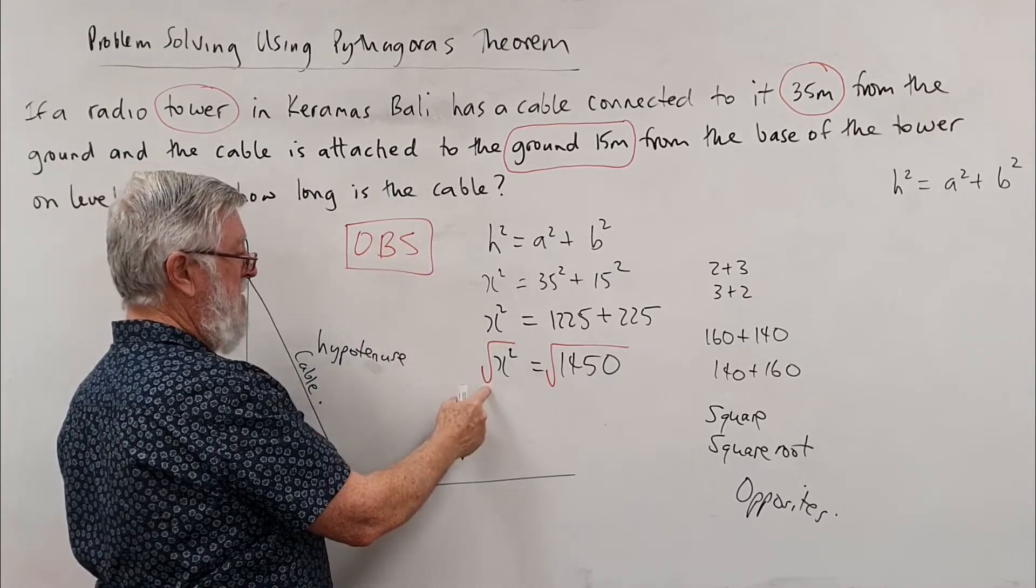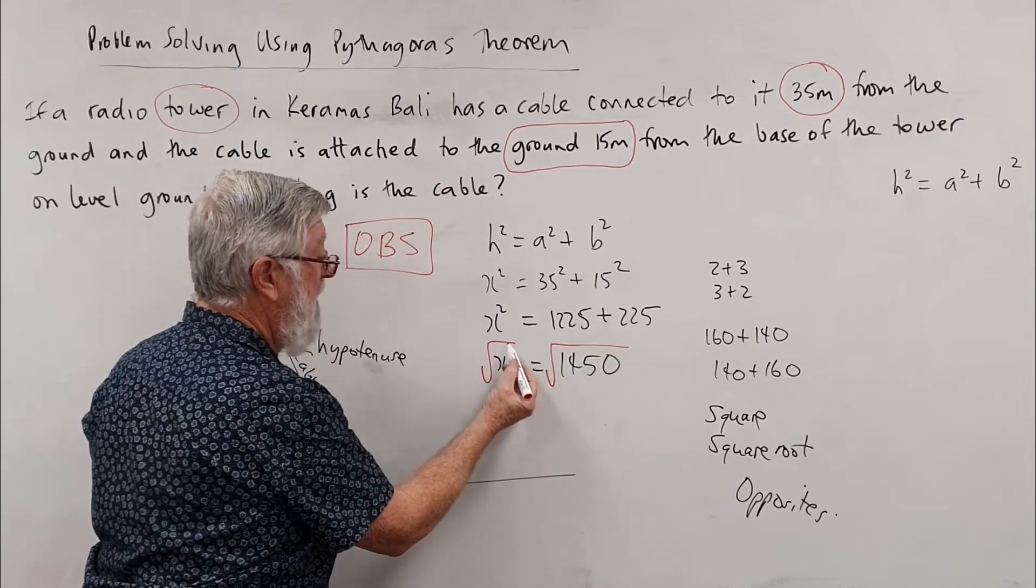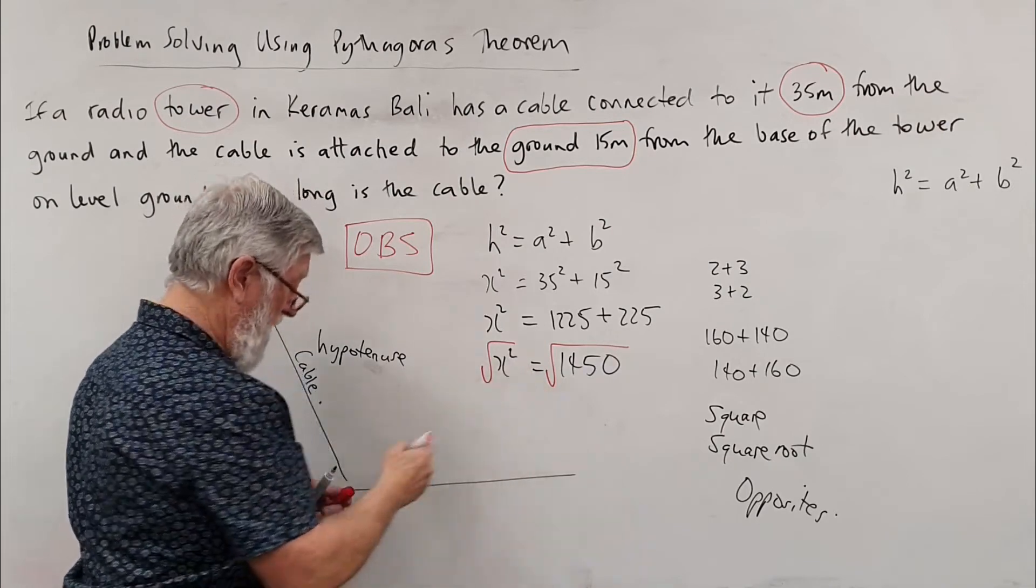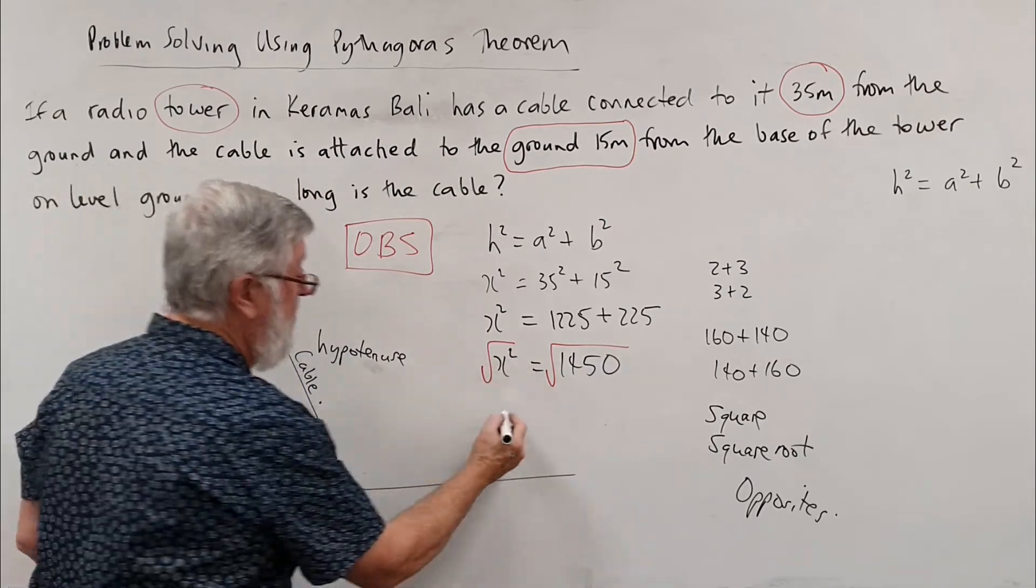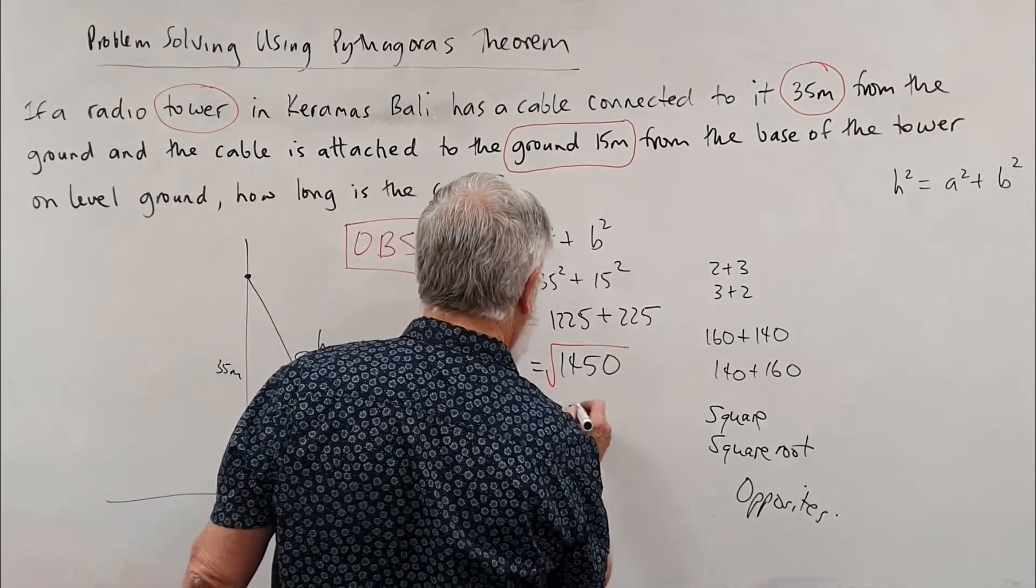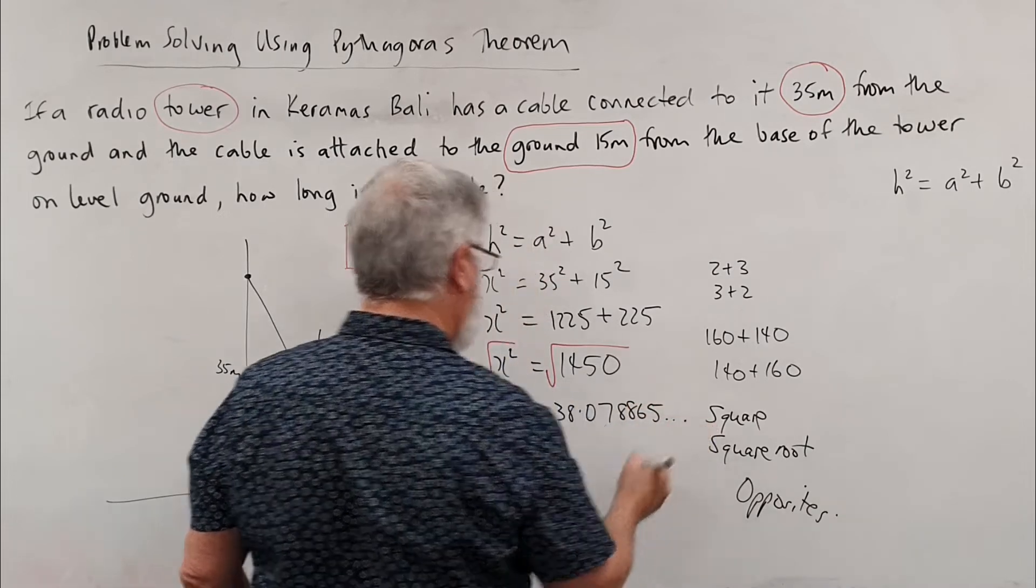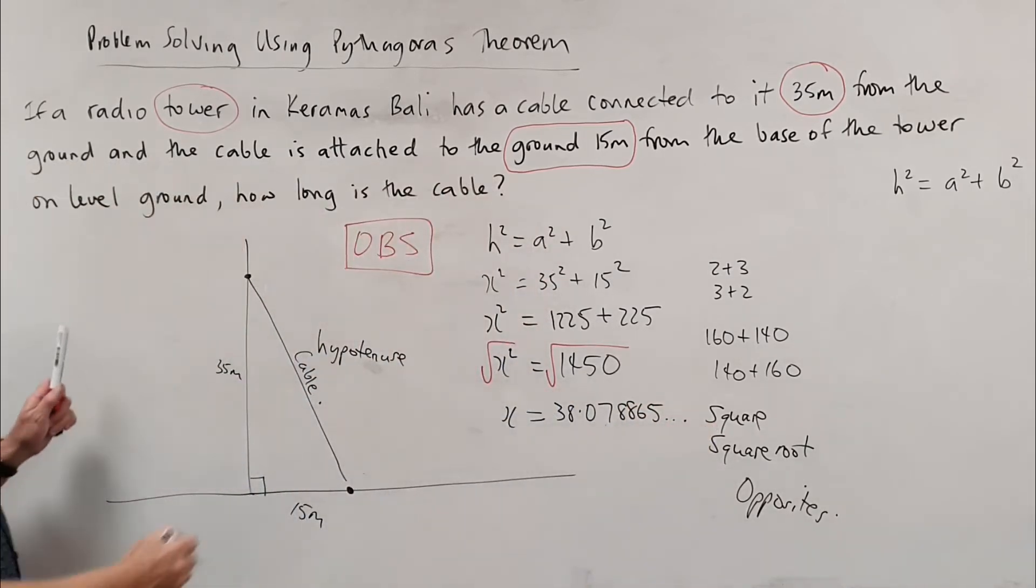We do the opposite of the square to both sides. What did the square and the square root do? Cancel out. That doesn't mean that x is one, it means we're left with x. This answer I've got written down is 38—I'm going to write a lot of numbers: 8865 and it keeps going on.